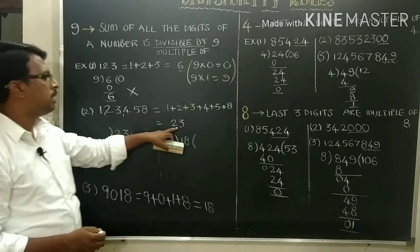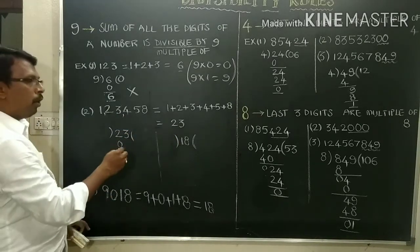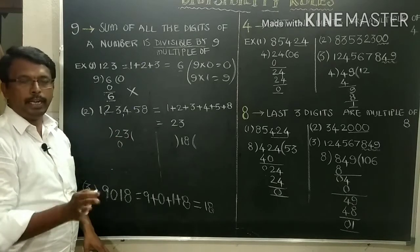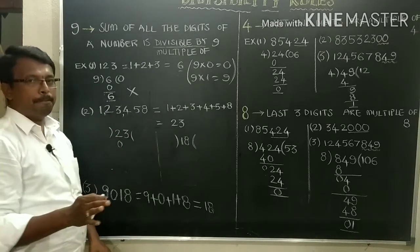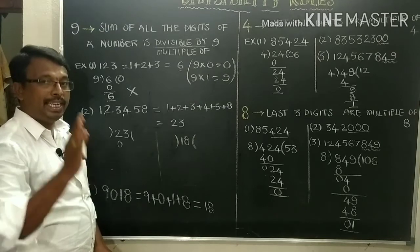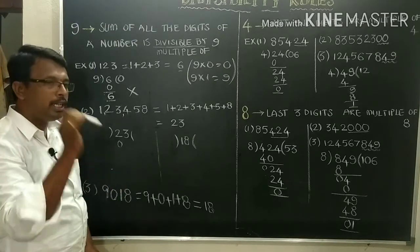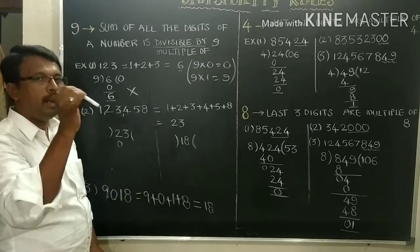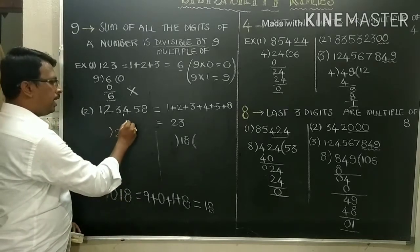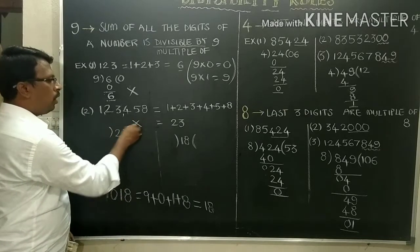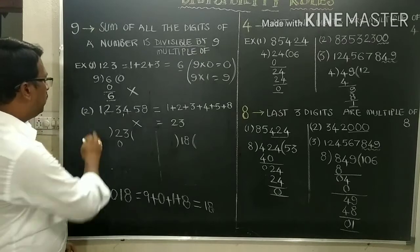Next example: the digit sum is 23, which is not in the 9 times table — 9 twos are 18, 9 threes are 27, there is no 23 in the 9 table. That's why we can say it is also not divisible by 9.